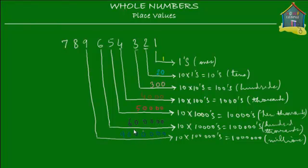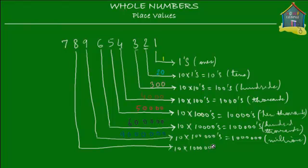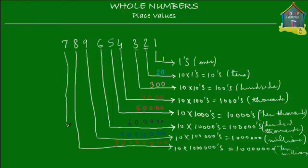After that it's quite simple — it's 10 times the 1,000,000's place. So this is your 10,000,000's place. The 8 has a value of 80,000,000 — that's 80 followed by 6 zeros, or 8 followed by 7 zeros, because millions have 6 zeros.